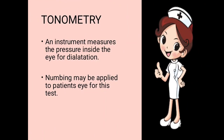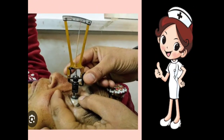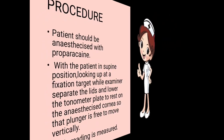The next test is tonometry. Tonometry is a procedure done to check the pressure of the eye before dilation. An instrument that measures the pressure inside the eye before dilation is known as the tonometer.